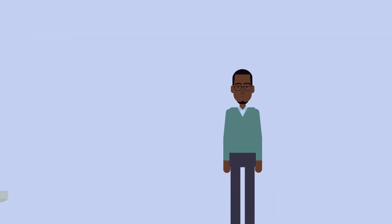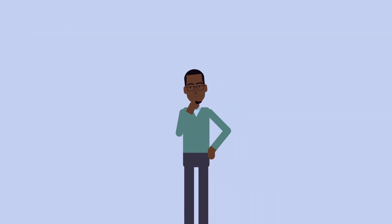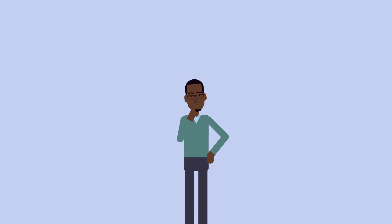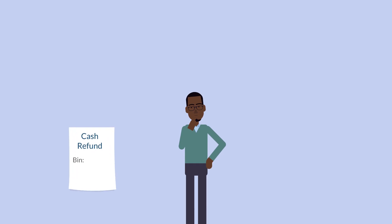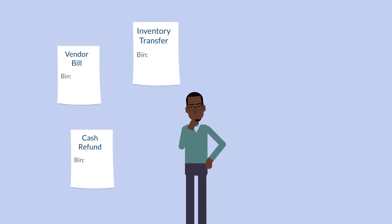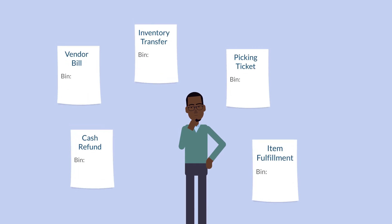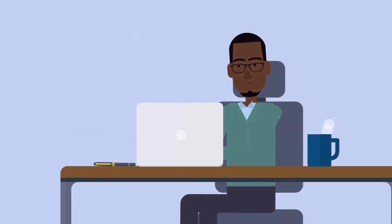Once everything for bins has been set up in your account, what does using bins look like practically? Bins can be selected on the standard transactions involved in both the sales and purchasing processes. For example, transactions like cash refunds, vendor bills, inventory transfers, picking tickets, item fulfillments, and invoices would include bin numbers. This keeps the on-hand quantities of the items up to date as the different types of transactions move the inventory in, around, and out of your warehouses. Being able to track items by their bin location is an immense asset to inventory management.